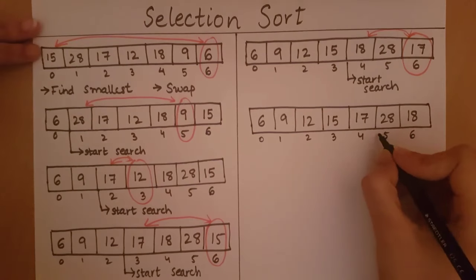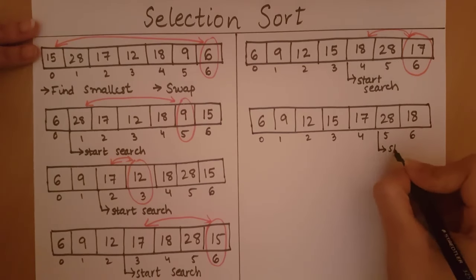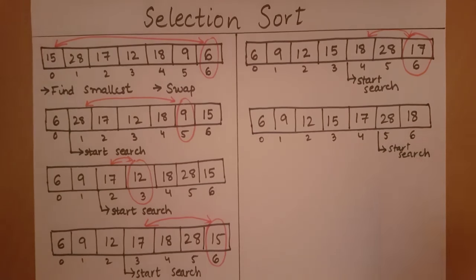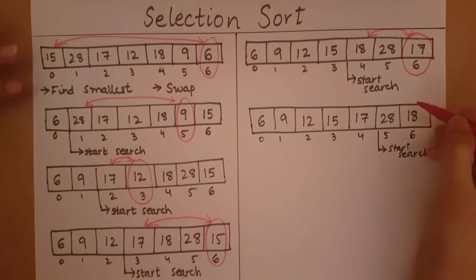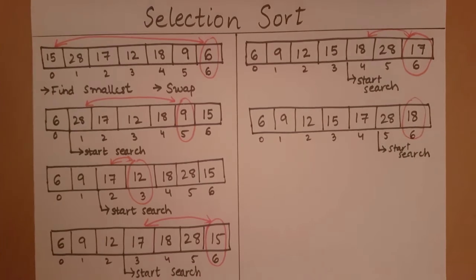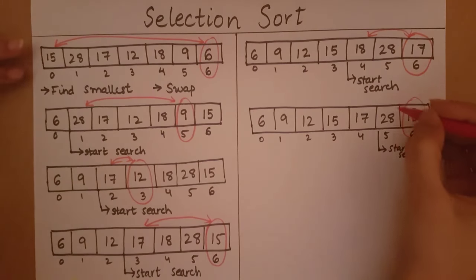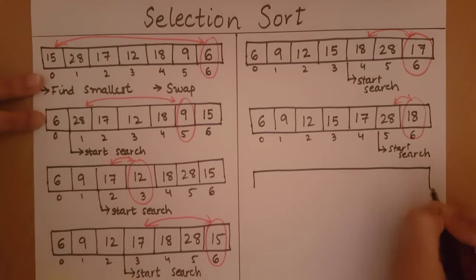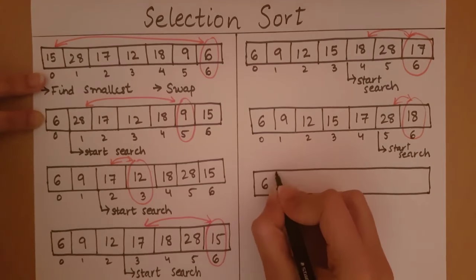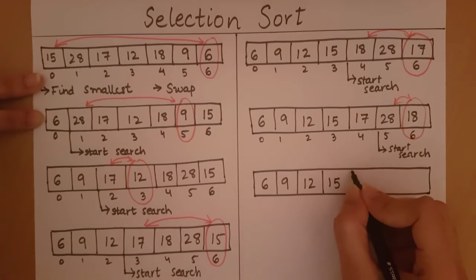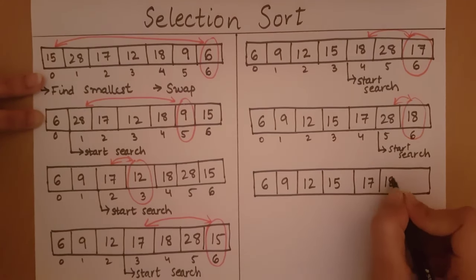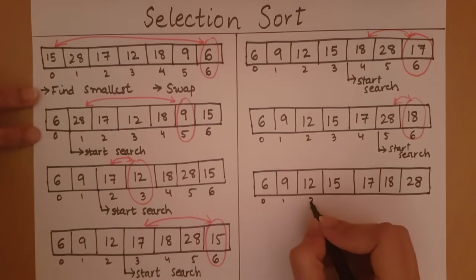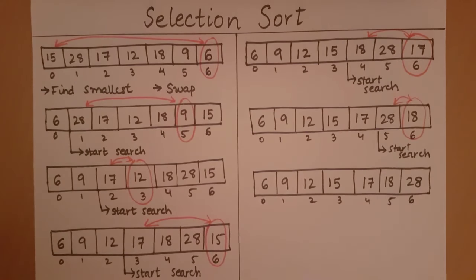We start our search from after 17. Searching for the smallest element after 17, we get 18 as our smallest element. We need to swap 18 with the element we started our search with — element 28. After swapping, 6, 9, 12, 15, 17, and 18 have all come to their correct positions.